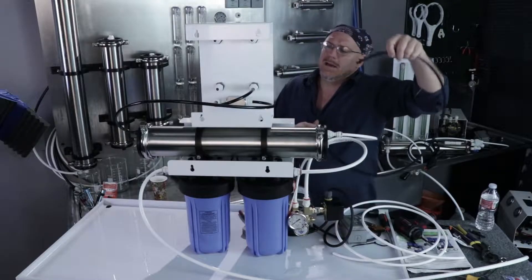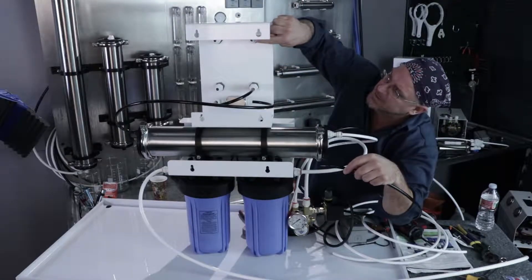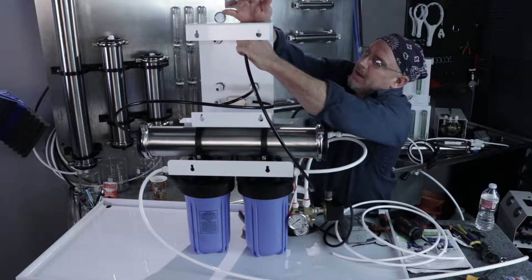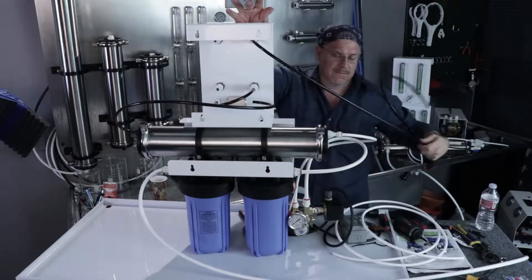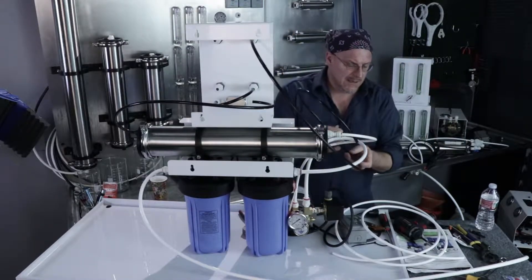Now you take the top of this flow meter, which is the drain out, and just run that to drain. And it's that simple. I'll leave that on the side for now.